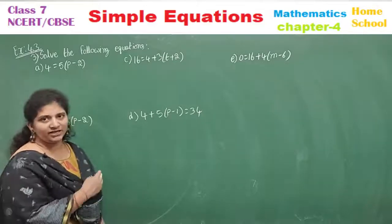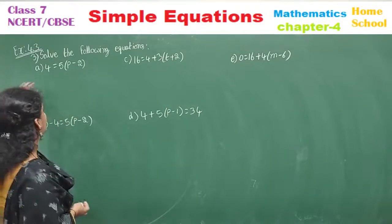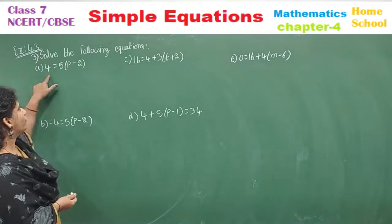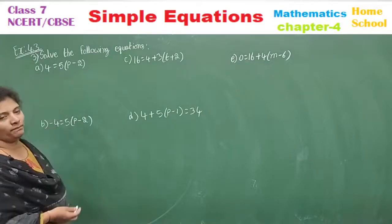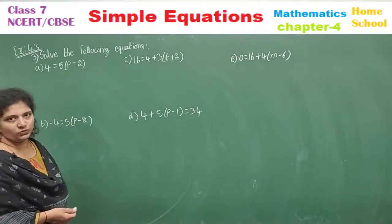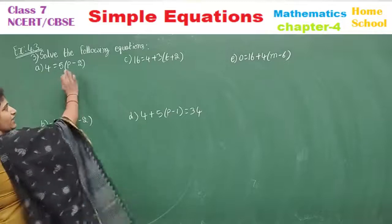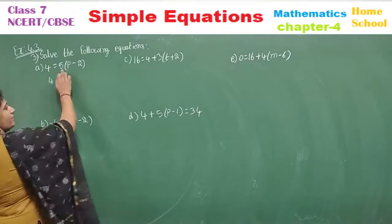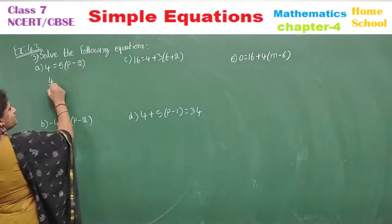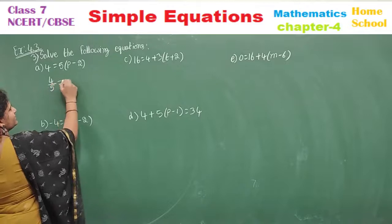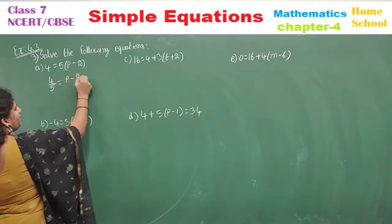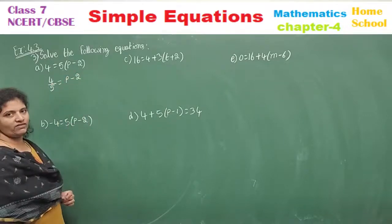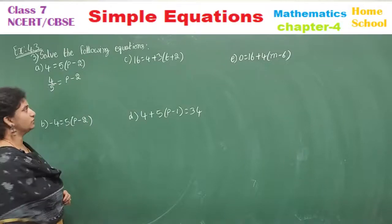Sub-question (a): 4 is equal to 5 into (p minus 2). The variable is p. 5 is a multiple — transpose it to the other side, where it becomes a divisor. So p minus 2 equals 4 by 5.